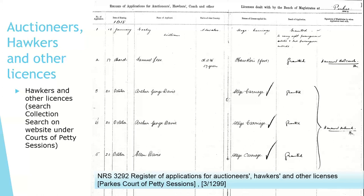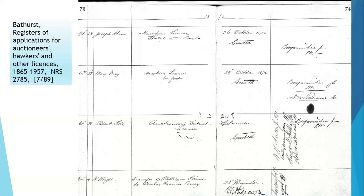There are other kinds of occupations the government was involved in licensing. Via the courts of Petty Sessions, for example, hawkers and stage carriage licenses were regulated. Here Samuel Lees has been licensed at Parkes in 1915 as a hawker travelling on foot, and we have four stage carriages — William Gooley, Arthur George Davis (twice), and Ellen Davis, suggesting the Davises may have a family business. In a Bathurst register, Joseph Steyne is licensed as a hawker allowed the use of a horse and cart, while Mary Gray is only allowed to hawk on foot.